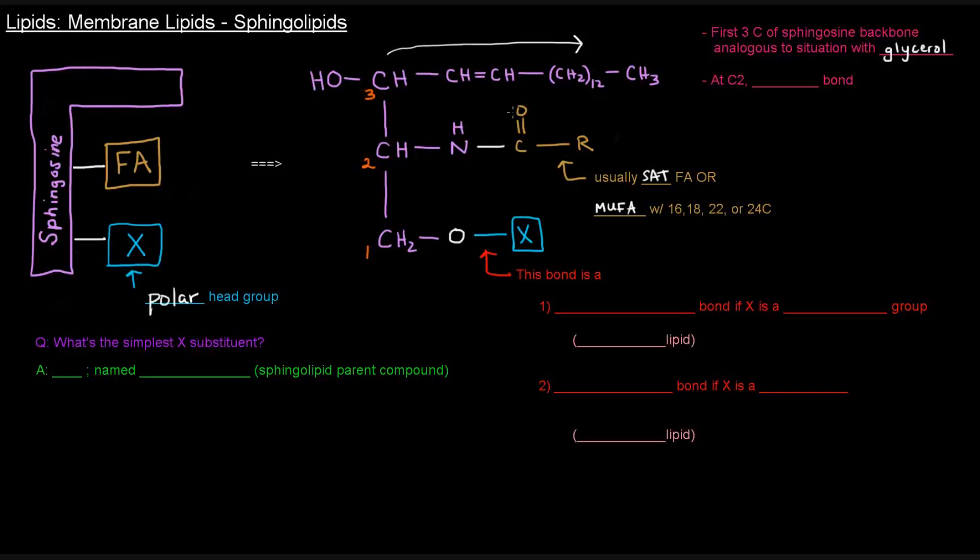And this acyl group is actually connected here at carbon number two to this nitrogen via an amide linkage. So this here is an amide bond. So at carbon number two, we have an amide bond.